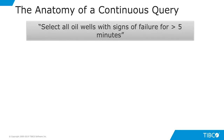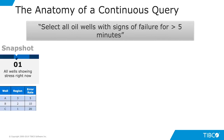Here's an example of one of those continuous queries. We are asking the question: which oil wells among the many that I'm monitoring are showing signs of failure? So the first thing that we get here is a snapshot — one of the snapshots in what you can think of as a movie — and it shows the wells that are currently showing signs of failure. But here's where the magic happens.